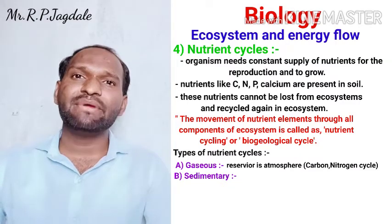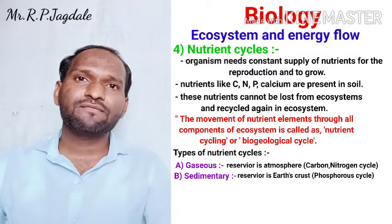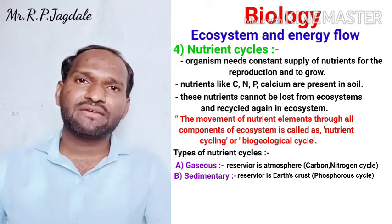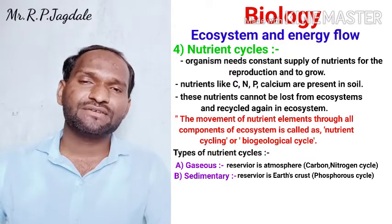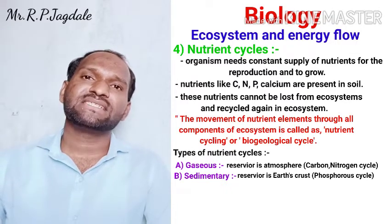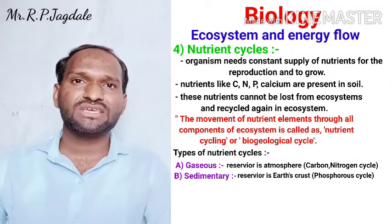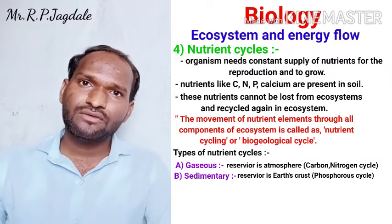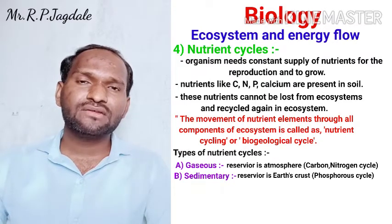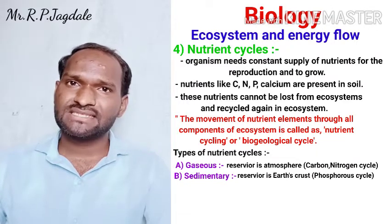The second is the sedimentary type of nutrient cycle. For this type, the reservoir is the earth's crust. An example of the sedimentary type of nutrient cycle is the phosphorus cycle. We are going to study one example from each type — the carbon cycle from the gaseous type, and the phosphorus cycle from the sedimentary type.